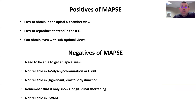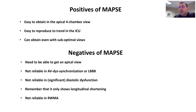The positives of MAPSE: it's usually easy to obtain an apical four-chamber view, so we should usually be able to get this. It's easy to reproduce in the ICU — we can trend patients to see if their cardiac function is recovering or how they're responding to inotropes.